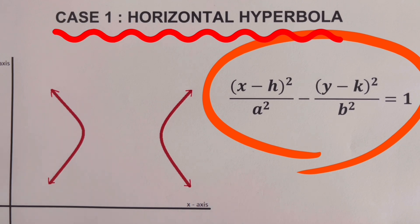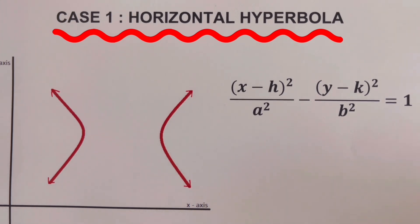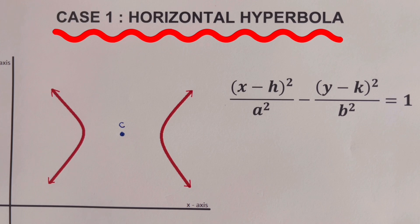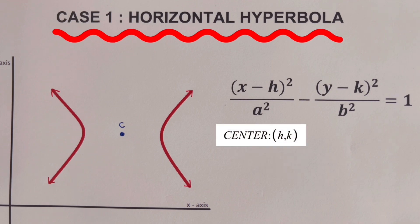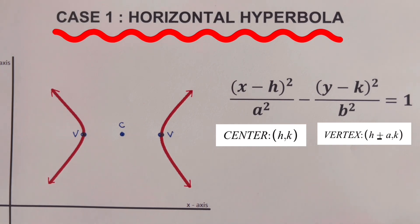We can form a horizontal hyperbola if the x part of the equation is positive — the one that I put inside the square. Let us locate the center of this hyperbola. Point C is the center, and the coordinate for the center of a horizontal hyperbola is H, K. Now let's locate the vertex. The coordinates for the two vertices would be H plus or minus A, comma K. The distance from the center to the vertex is A.